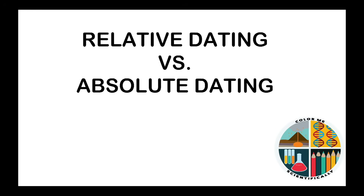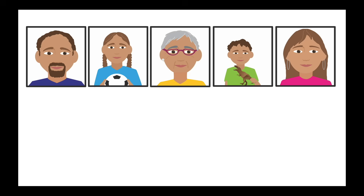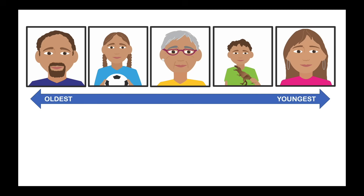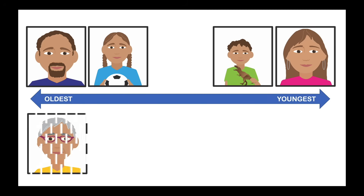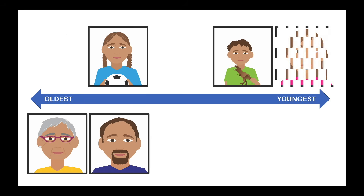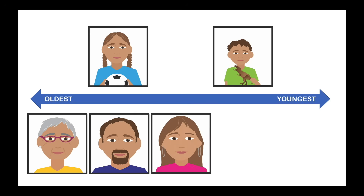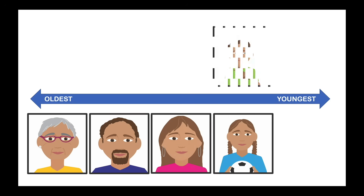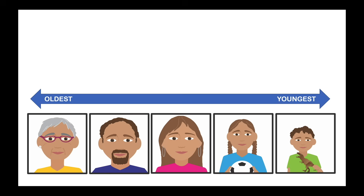Relative dating versus absolute dating. What is relative dating? Well, if you look at a family, can you put the family members in order from oldest to youngest? Grandma's going to be the oldest, of course. We're not really sure if mom or dad is going to be oldest, but let's just guess and put dad next, and then mom, and then the older sister, and then finally little brother. We've just arranged the whole family in order from oldest to youngest ages, but using relative ages.